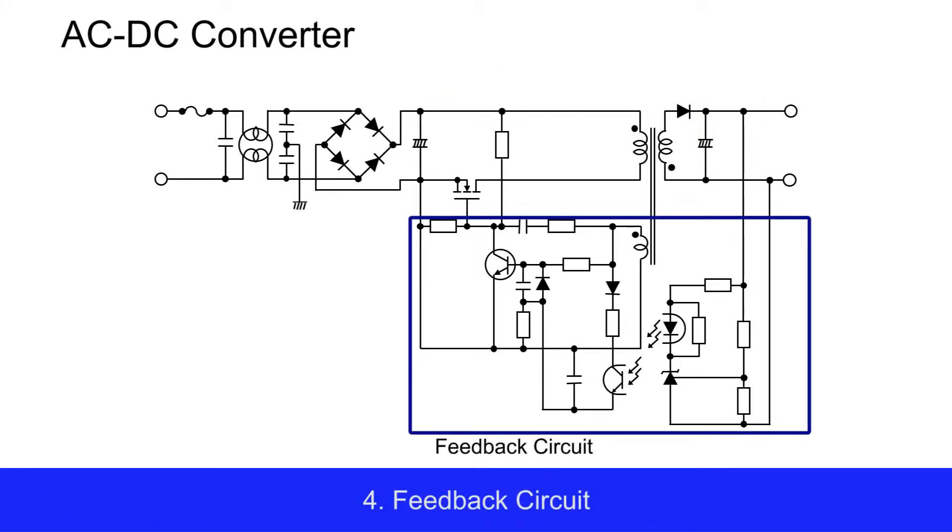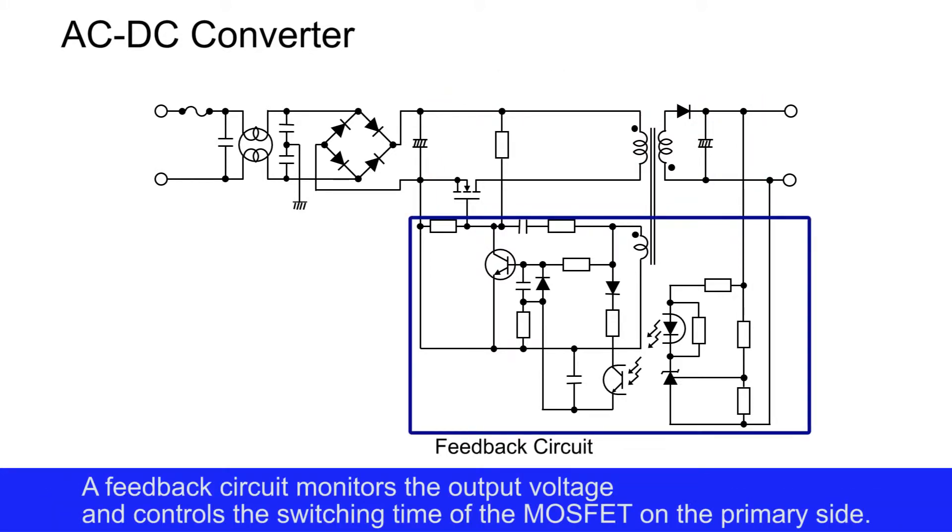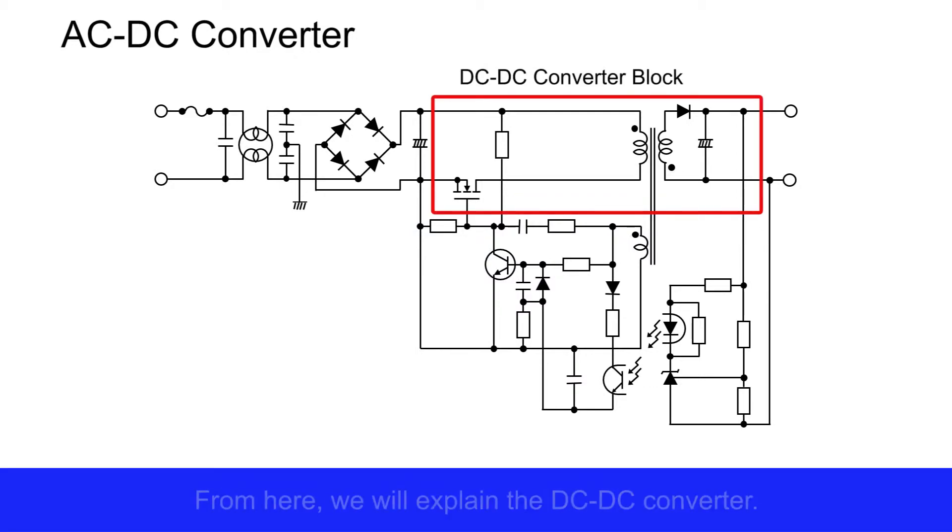Fourth, the feedback circuit. A feedback circuit monitors the output voltage and controls the switching time of the MOS FET on the primary side. From here, we will explain the DC-DC converter.